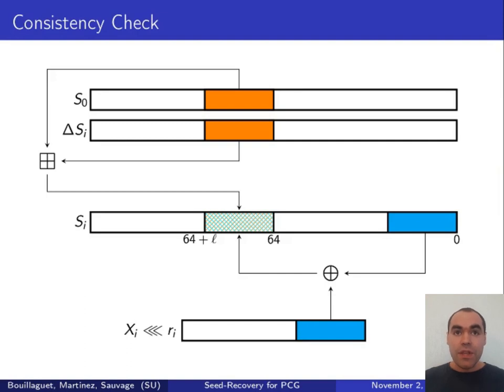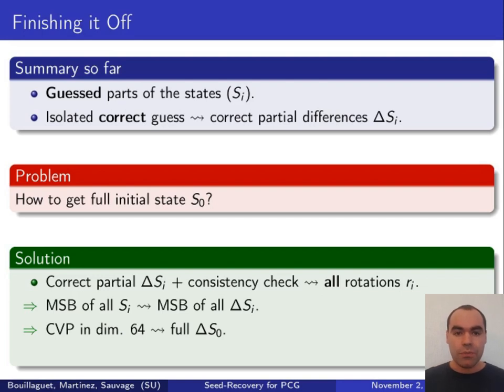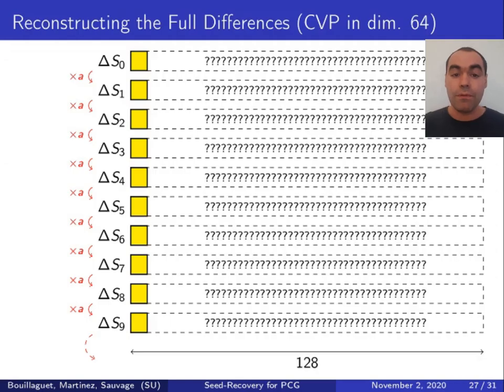Indeed, we know the correct value of the partial differences, and we know the correct values of the least significant bits of each state. So we just have to try all possible values of the other rotation until it matches on the middle of the state. So this allows us to compute all rotations. This means that for all subsequent states, we can get the correct values of the six most significant bits. By subtracting, this gets us the six most significant bits of all full differences.